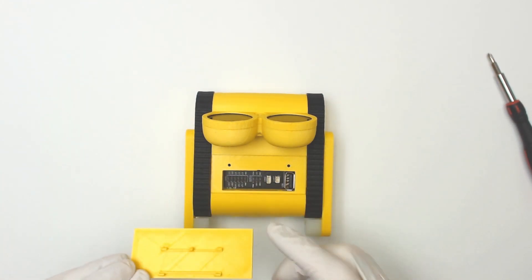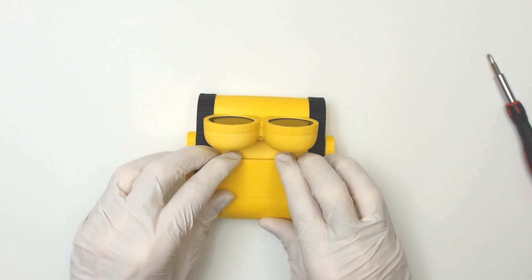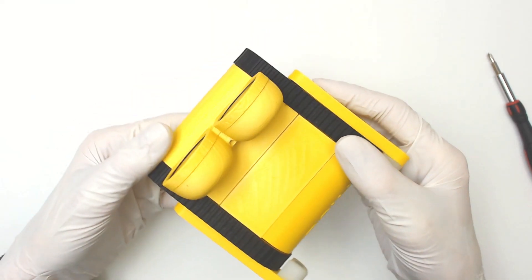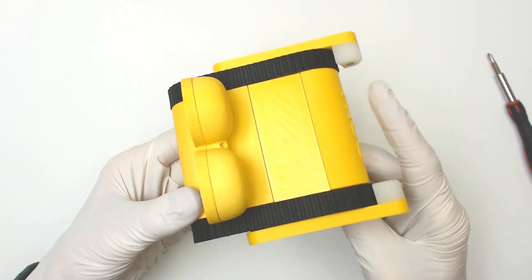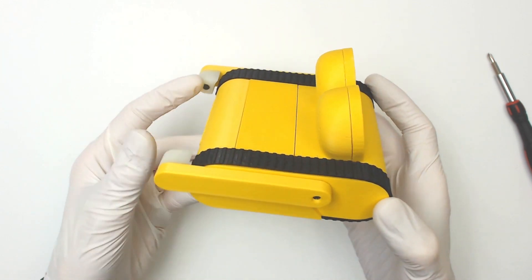In the final step, align the IO lid to the body and close it. Congratulations, the DIY Dolly assembly is complete.